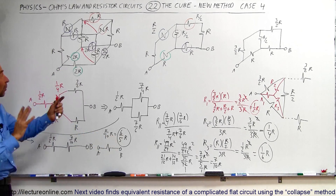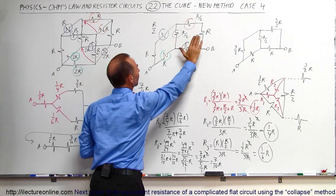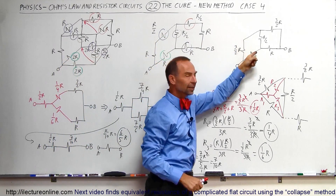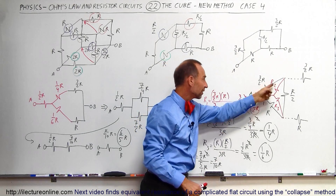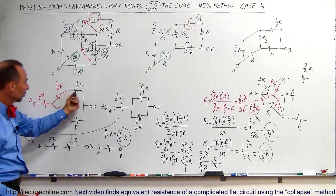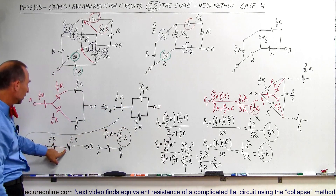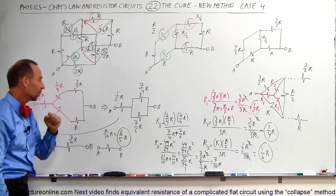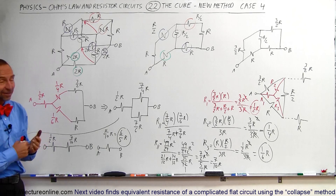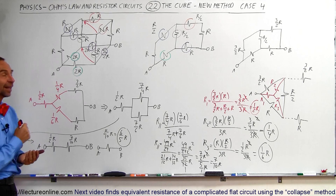That's all done by recognizing the symmetry of the cube, collapsing it from three-dimensional to a two-dimensional flat circuit, identifying the delta configuration, performing the delta-to-Y conversion, then recognizing the parallel branch and using product over sum to find the equivalent resistance. Adding the two series resistors together gives a single equivalent resistance of 6/5 R. It's a slick way — not a short way — but it assures you the correct answer when you use this technique properly.